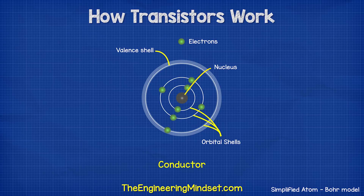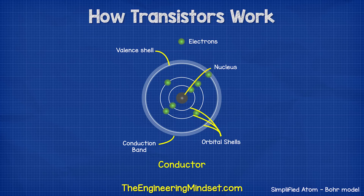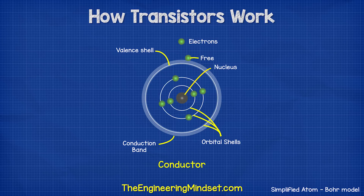The outermost shell is known as the valence shell. A conductor has between one and three electrons in its valence shell. The electrons are held in place by the nucleus, but there is another shell known as the conduction band. If an electron can reach this, it can break free from the atom and move to other atoms. With a metal atom such as copper, the valence shell and the conduction band overlap, so it's very easy for the electrons to move.